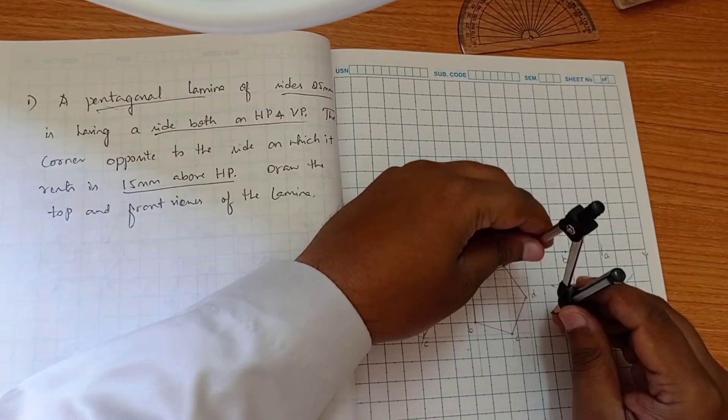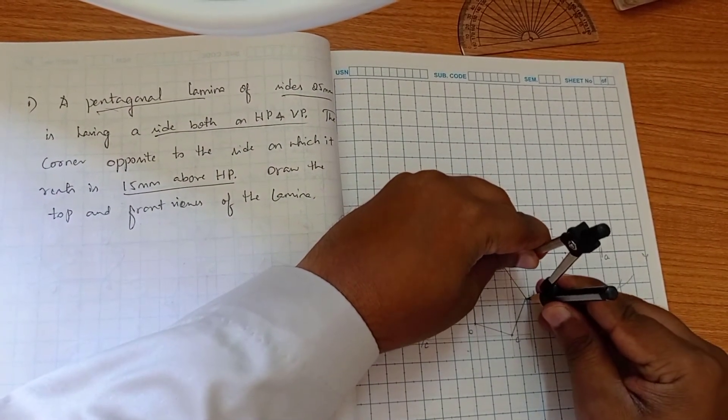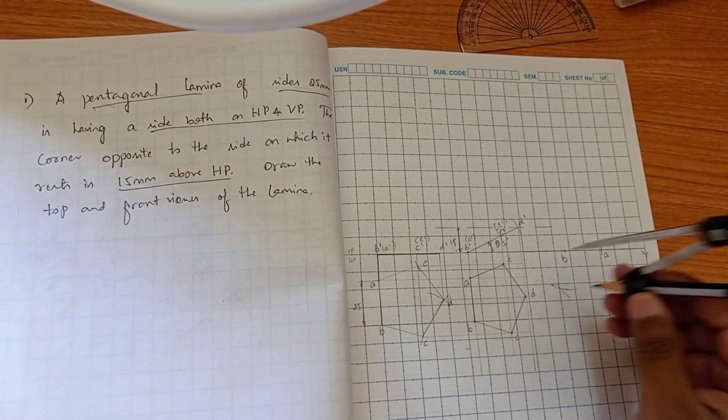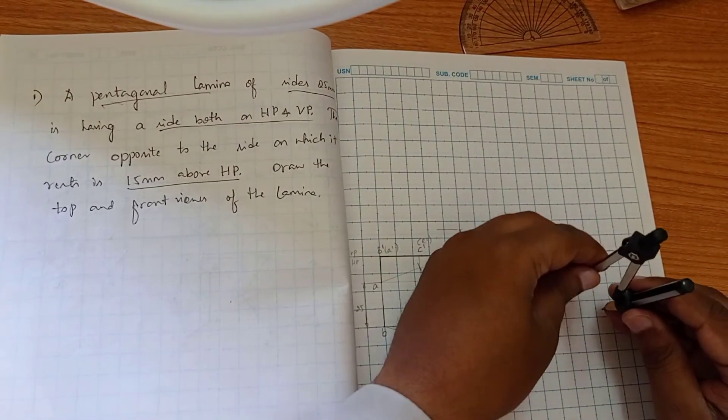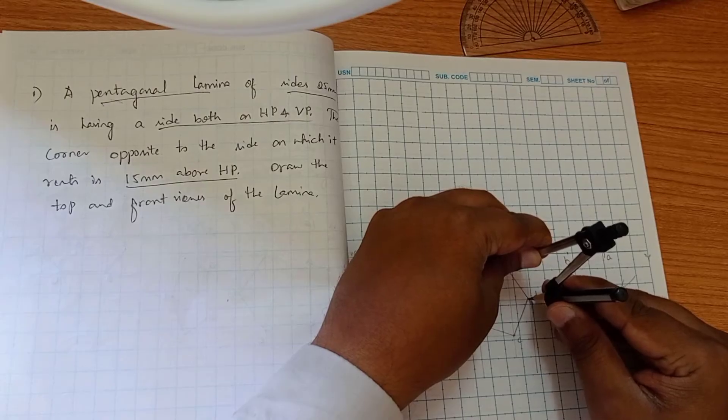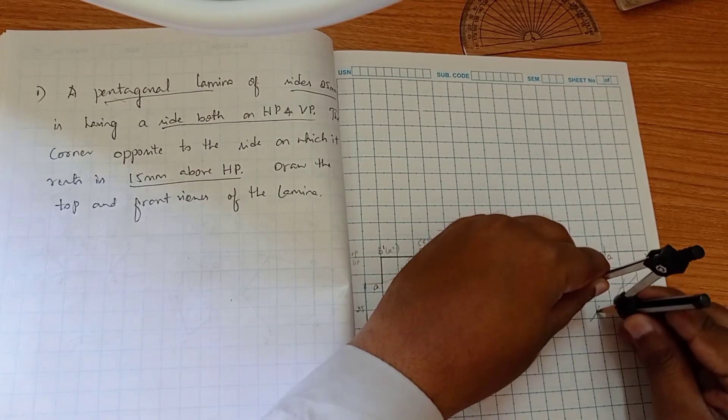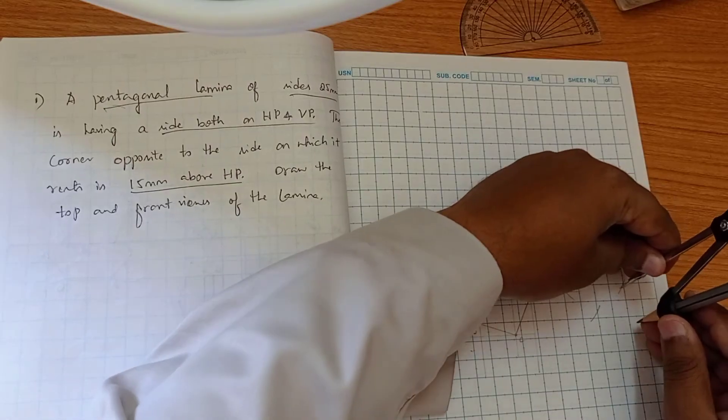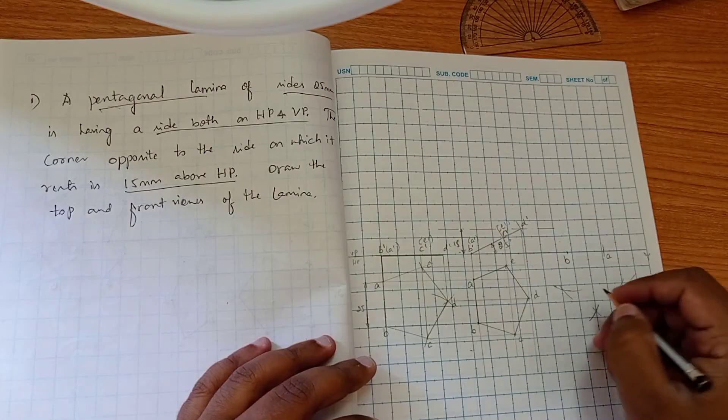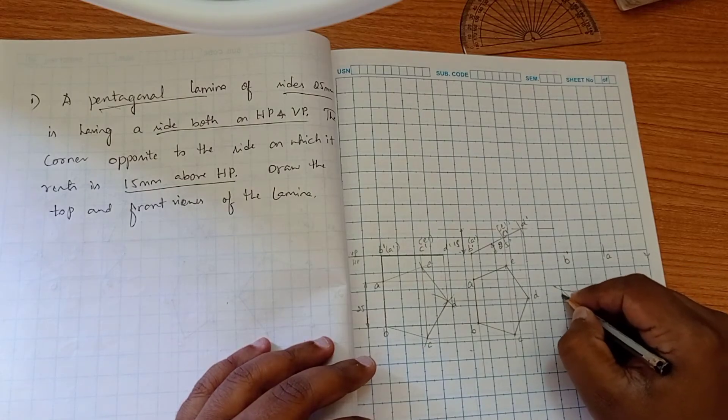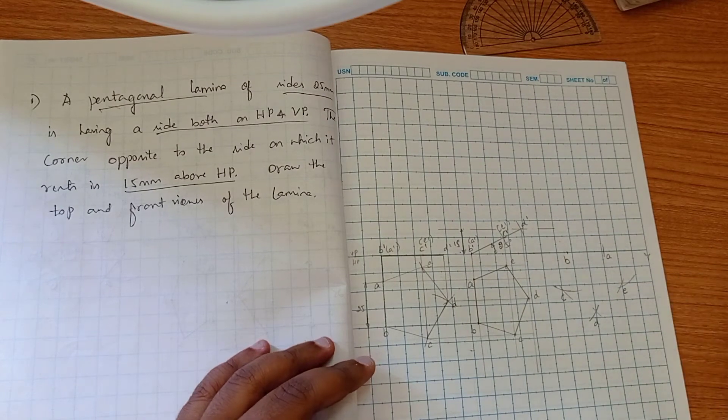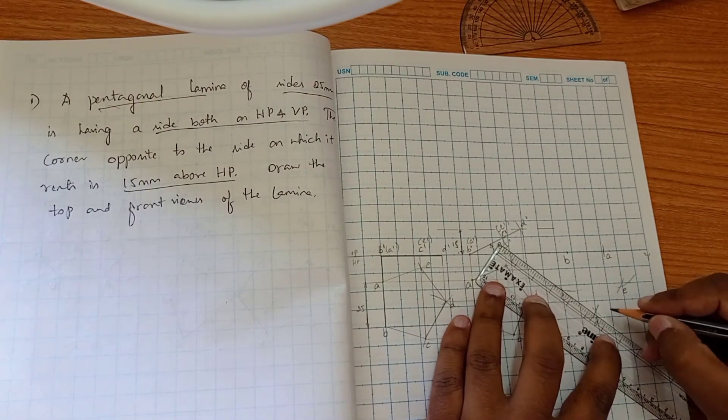After this, we have to transfer the diagram, measuring this length E to D, so this length is exactly equal here. So this is C, this is D, and this is E. Join all these points.